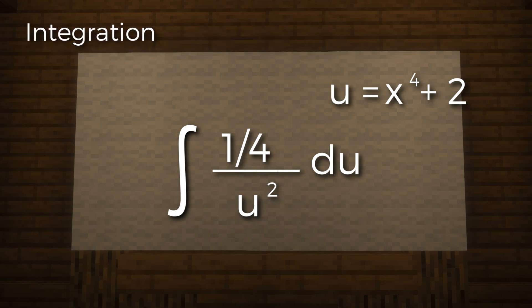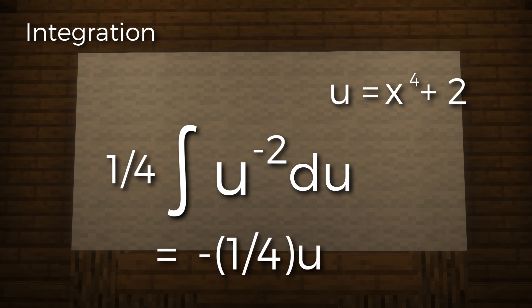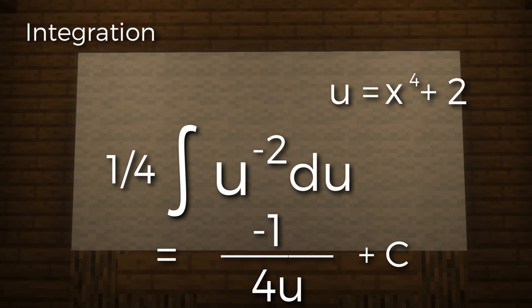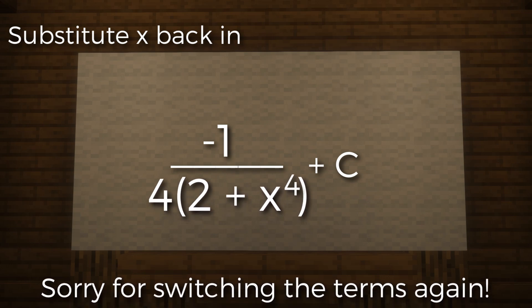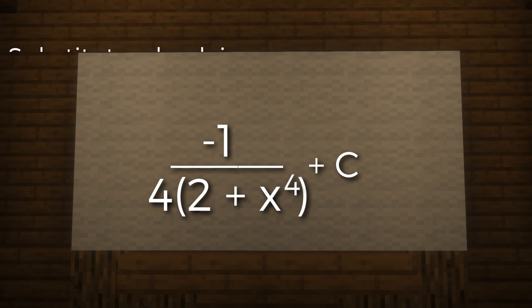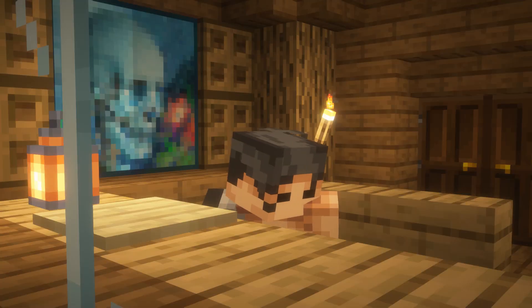Now for integration, we leave 1/4 out as a constant and evaluate 1 over u to the 2. We rewrite it as u to the negative 2, which makes it clear that the antiderivative is negative u to the negative 1 according to the power rule. So our expression is 1/4 times negative u to the negative 1 plus C, or negative 1 over 4u. Then finally, for our very last step, we substitute 2 plus x to the 4 back in and get negative 1 over 4 times (2 plus x to the 4) plus C. If you want to check it, take the derivative and see if it results in the original question.